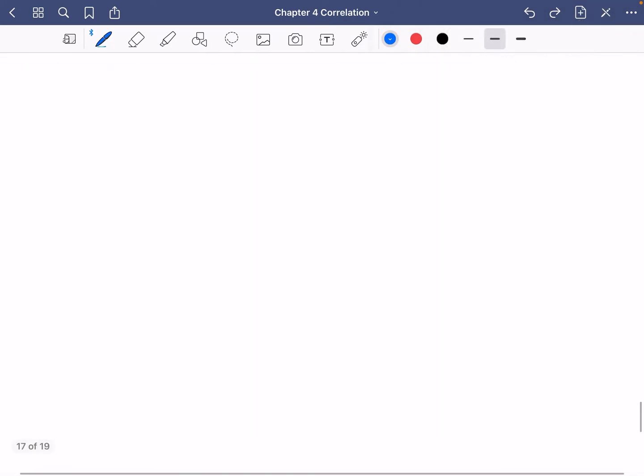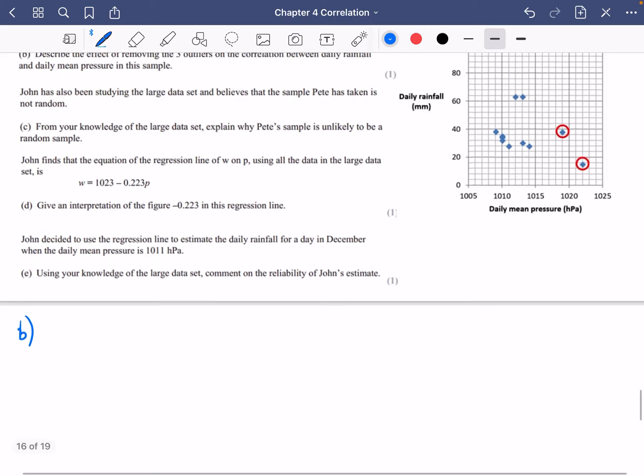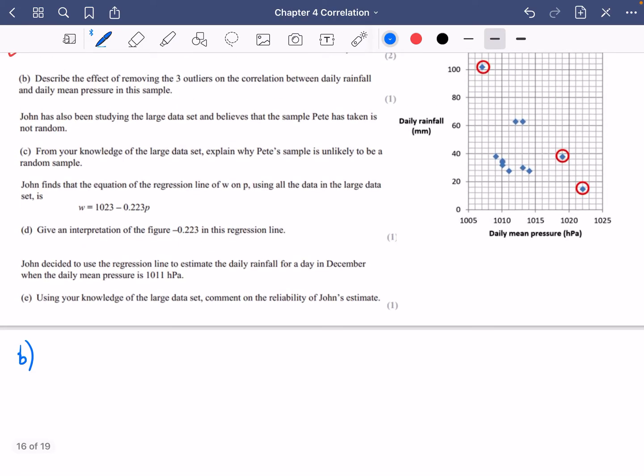Let's just add in a blank page. So for part B of the question, because we skipped A, the effect of removing the three outliers means that the correlation changes from weak negative to no correlation.